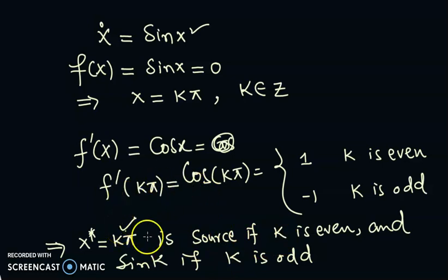In other words, you can call that if k is positive then x star k pi is unstable because it is a source.